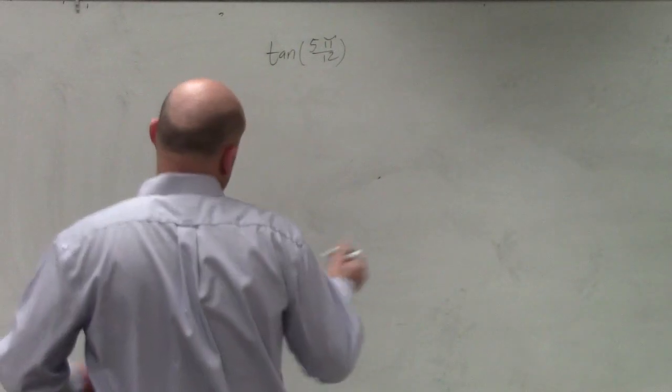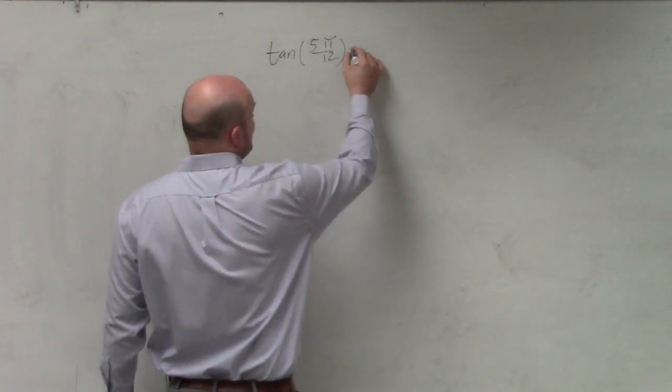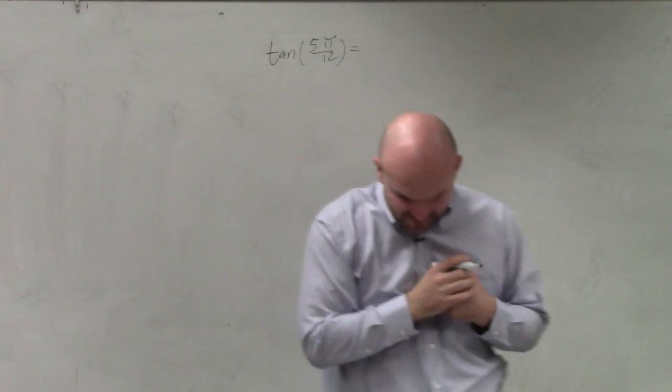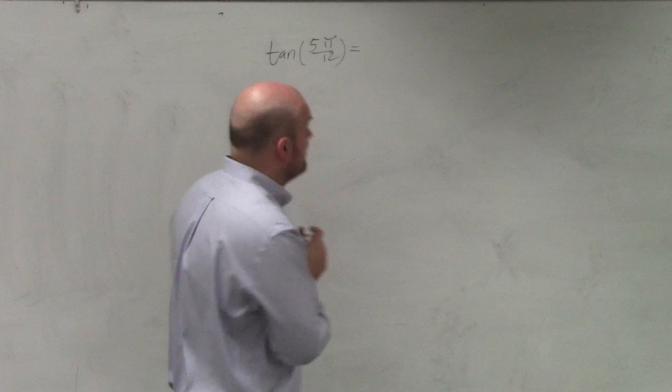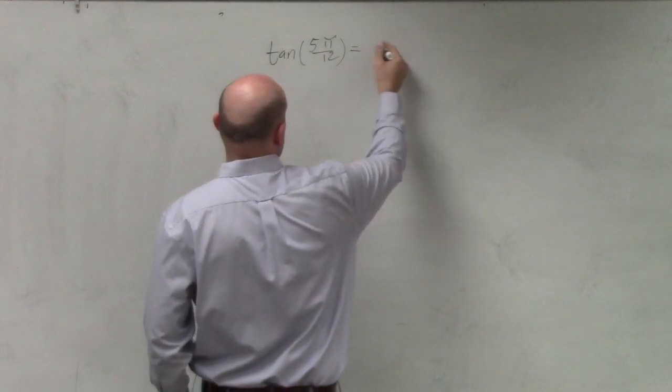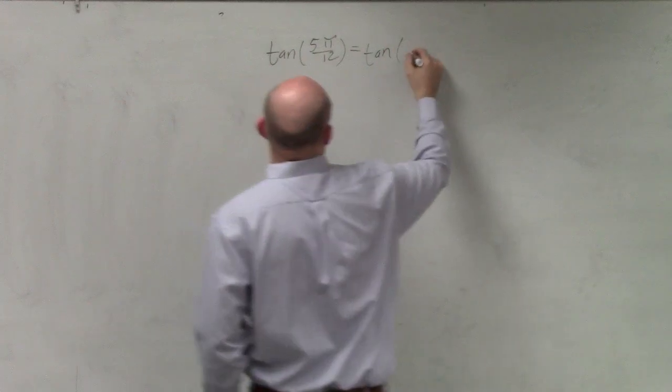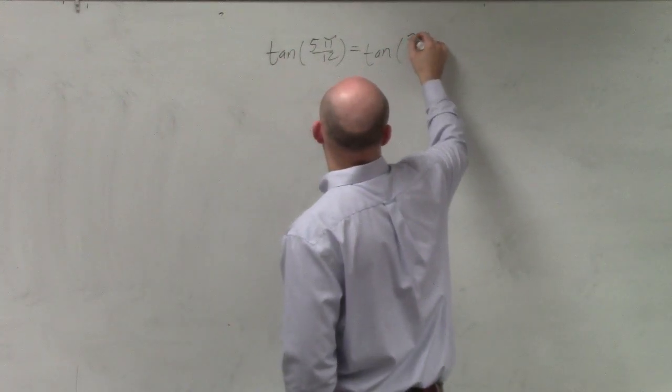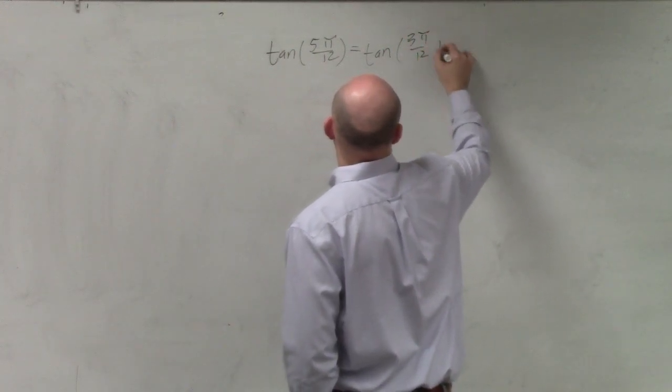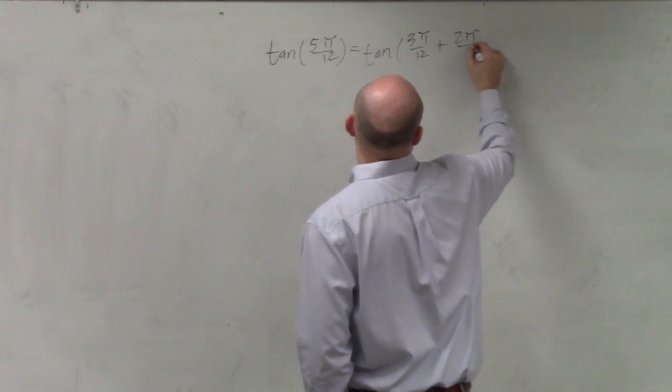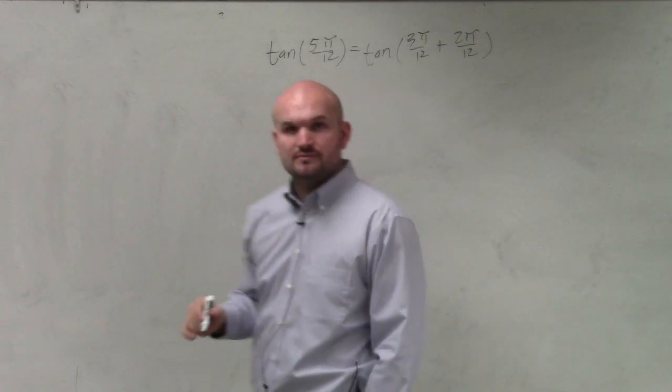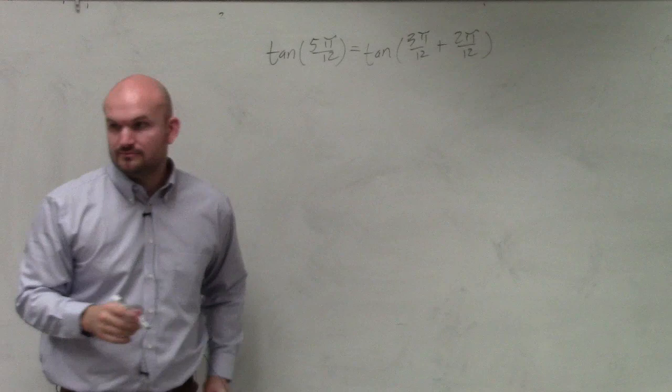But in this case, for this problem, all we're simply going to do is break this apart. And so this asks you to use the sum or difference angles, sum or difference formulas. So I realize that I can add this. I can break this apart into tangent of 3π over 12 plus 2π over 12. Would everybody agree with me on that? Yes.